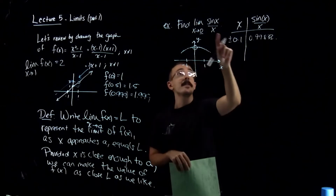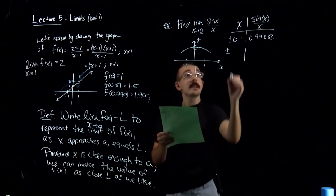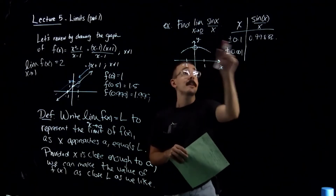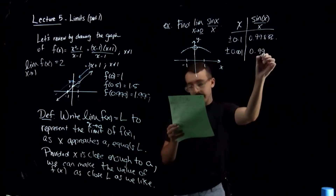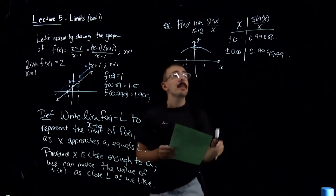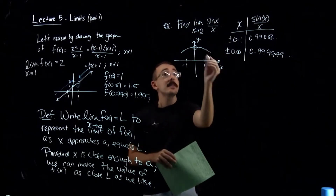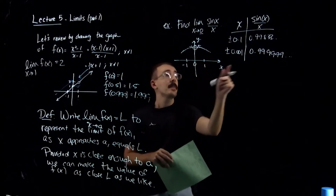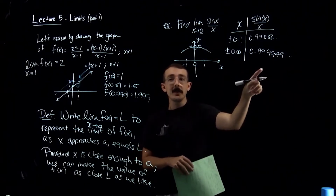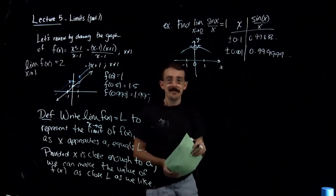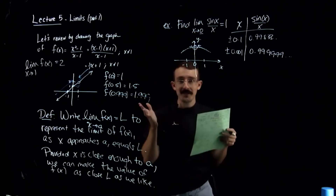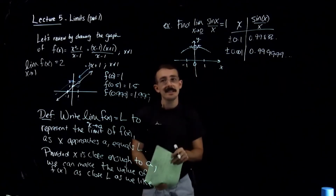Let's make a small table. Plugging in ±0.1 gives 0.99833..., which is 0.1 away from 0. Getting even closer — plugging in 0.001 — gives 0.999999..., with at least the first six digits being 9s. As we get closer and closer to x = 0, you can guess what the limit should be: the graph is approaching 1. So this limit is 1. For any value except 0 itself, you get a defined value extremely close to 1.